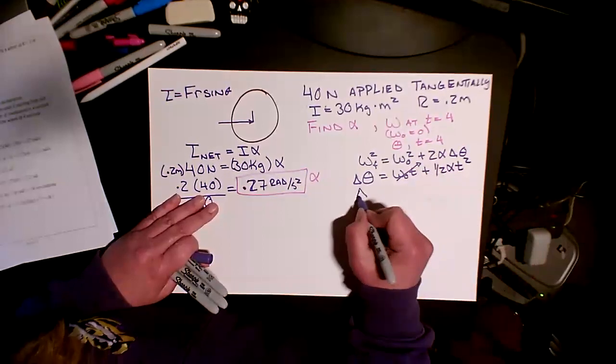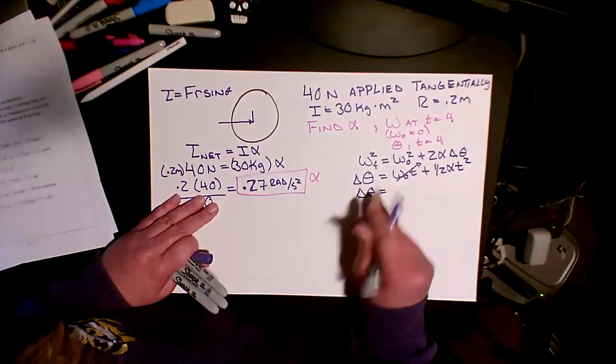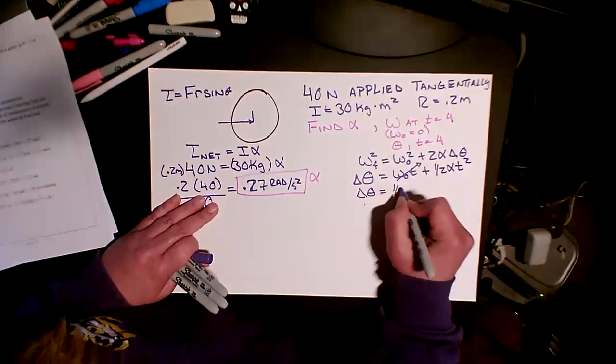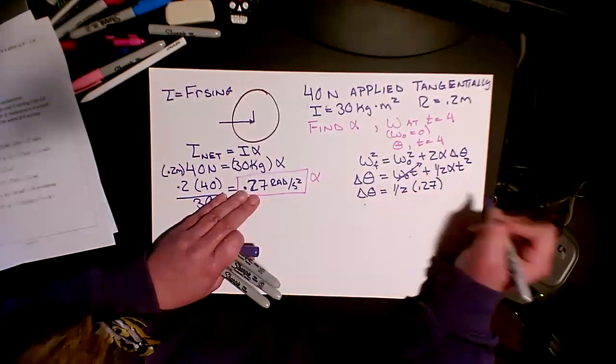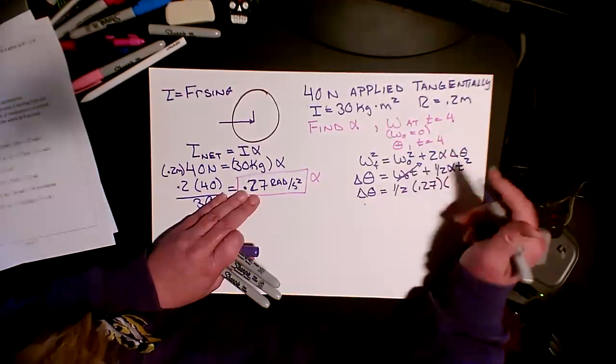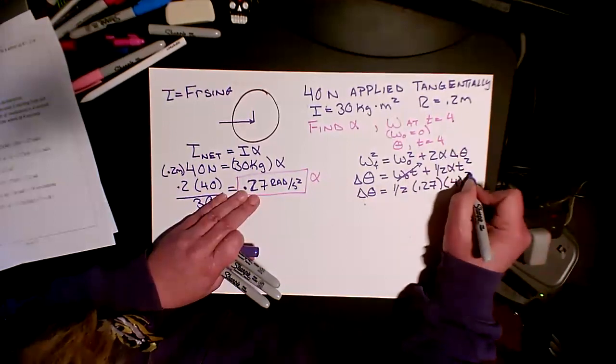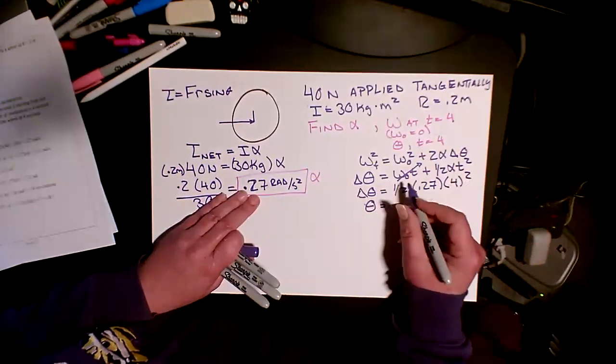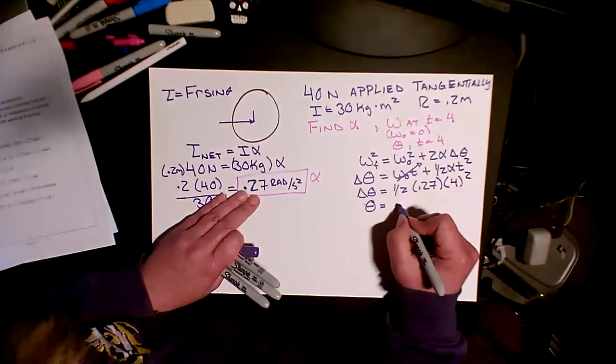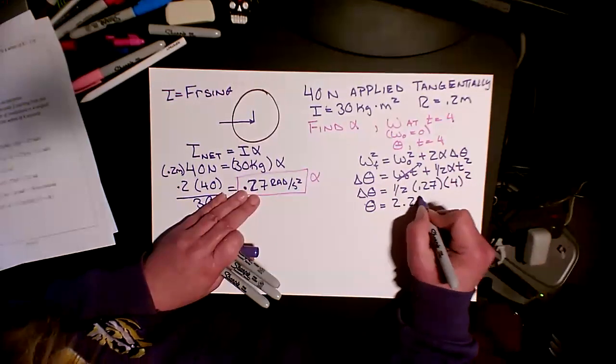So my change in theta, the amount of radians I'm going to go through, is going to be my one half, we just figured this out, 0.27 radians per second squared times four squared. So the amount of radians I go through is 2.2 radians.